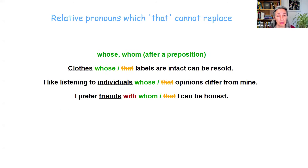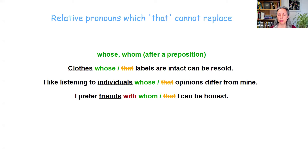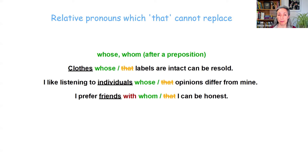So which ones we cannot replace with 'that'? That would be whose and whom after a preposition. For example, we can't say 'clothes that labels are intact' — it has to be 'clothes whose labels are intact.' 'I like listening to individuals whose opinions differ from mine' — we cannot use 'that' here. And if we keep the preposition in the middle of the sentence, 'that' doesn't work either: 'I prefer friends with whom I can be honest.'